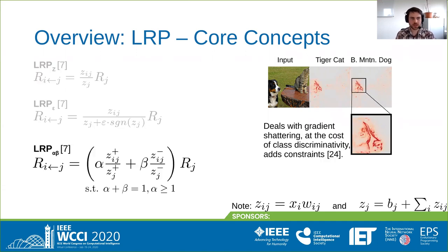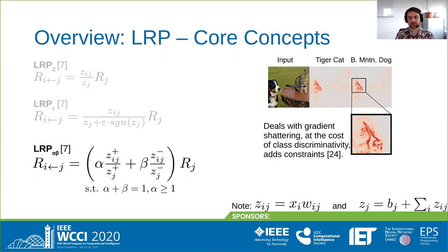For this purpose, the original LRP publication also introduced the alpha-beta rule, which separately decomposes the positive parts and the negative parts of the forward mappings, then merges those separate branches of relevance. This effectively deals with gradient shattering, however it comes at the cost of class discriminativity if applied to the whole network in every layer, and adds additional constraints to its application.